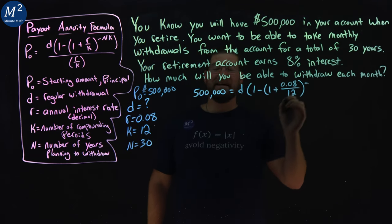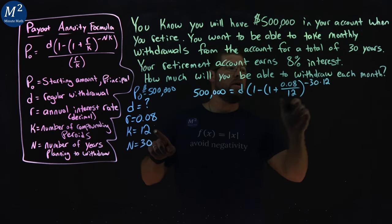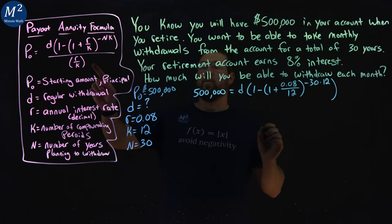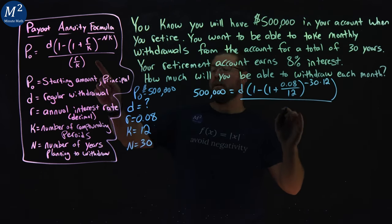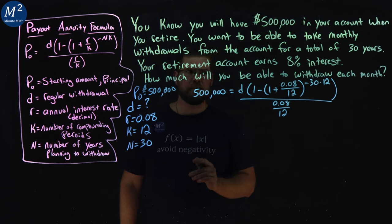All to the power of negative N, 30, times K value, which is 12. We close the parentheses here. Now, we're dividing that whole right-hand side by R over K, which is 0.08 over 12.